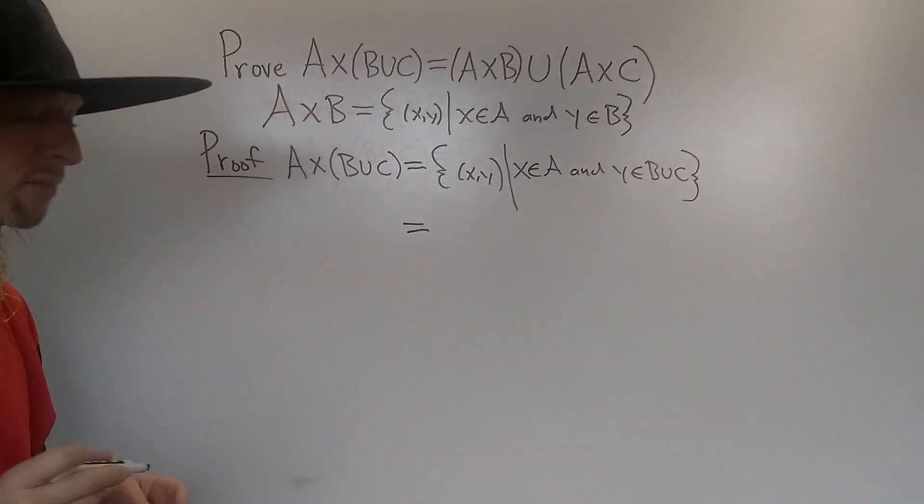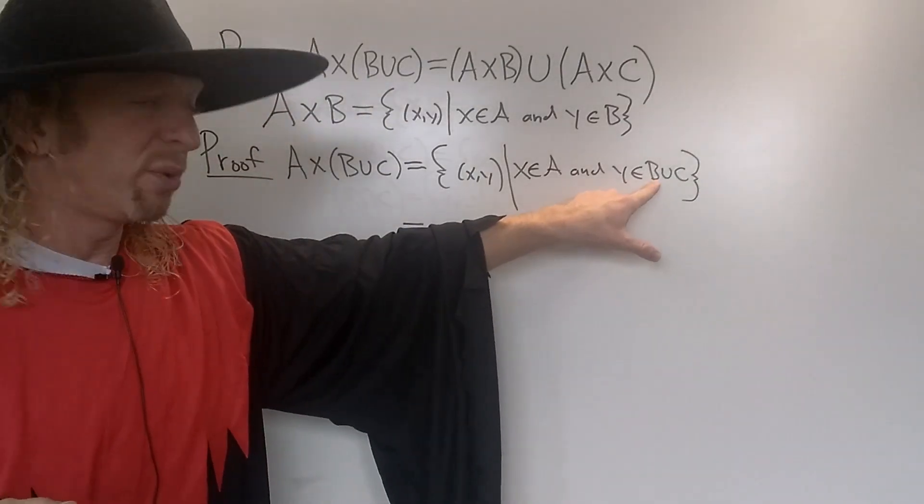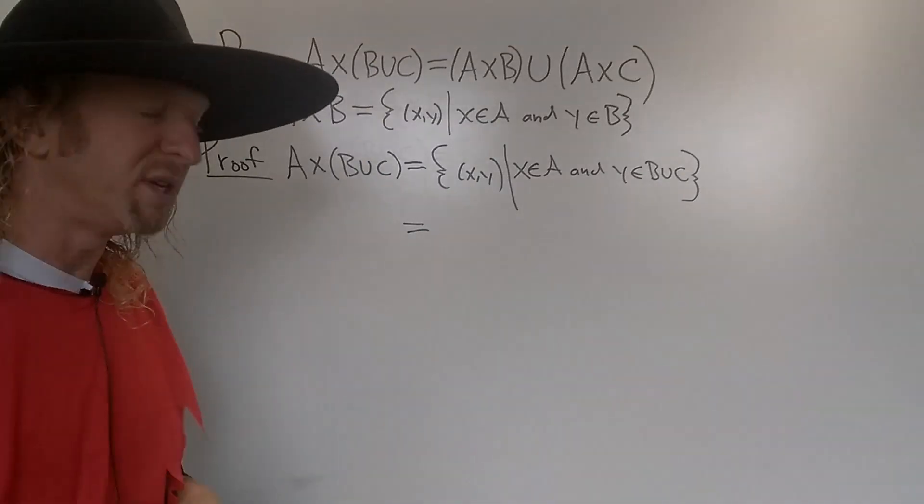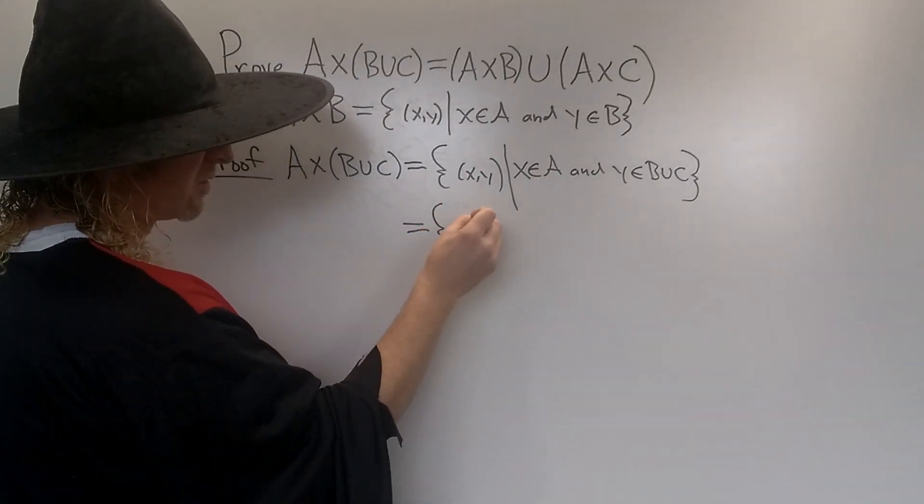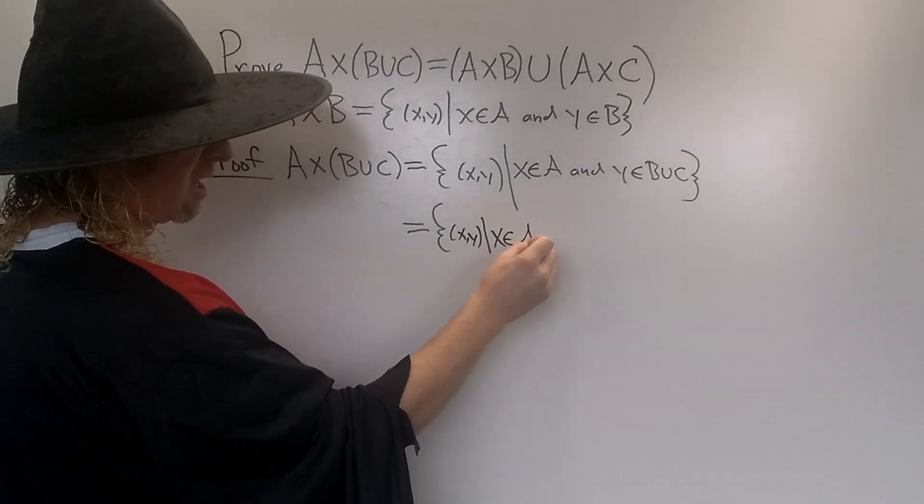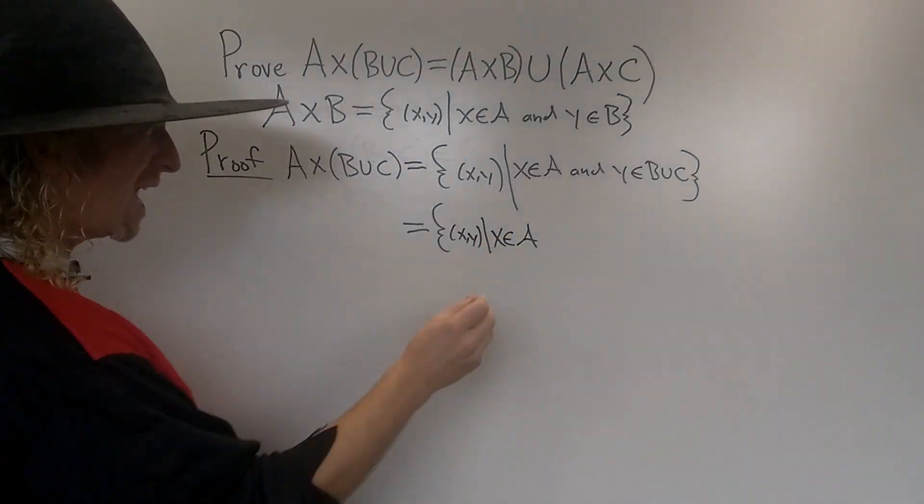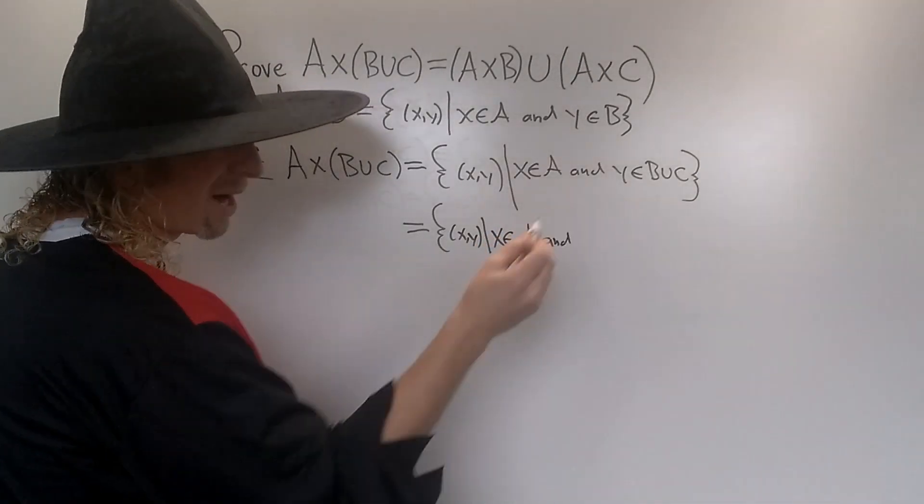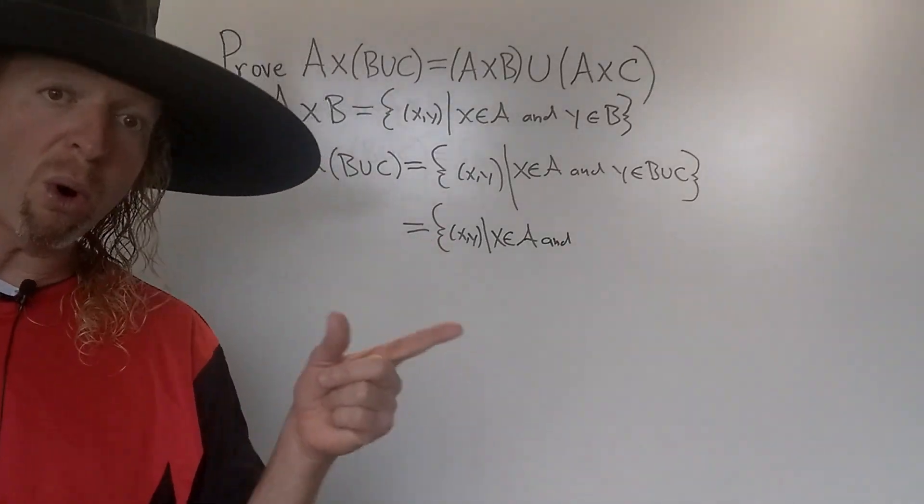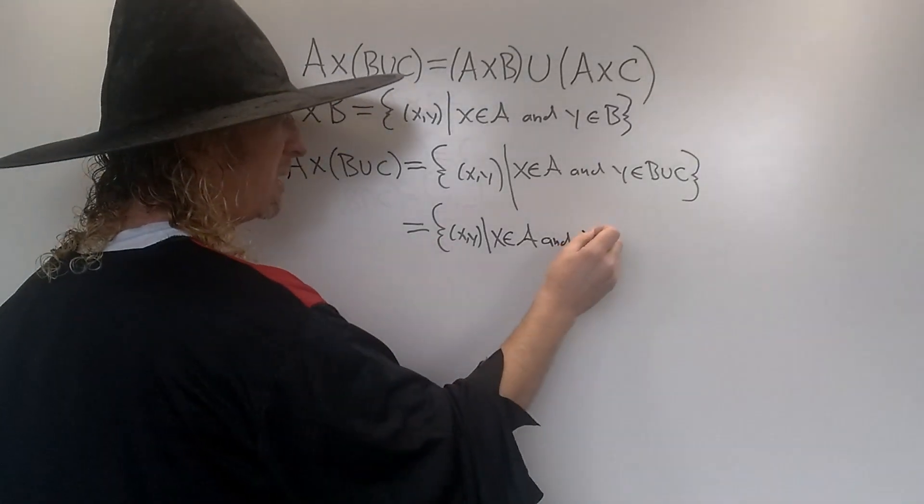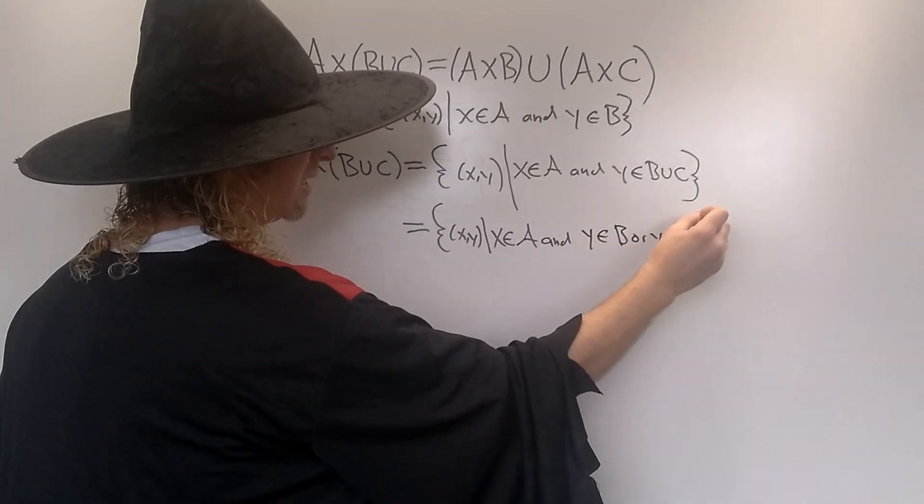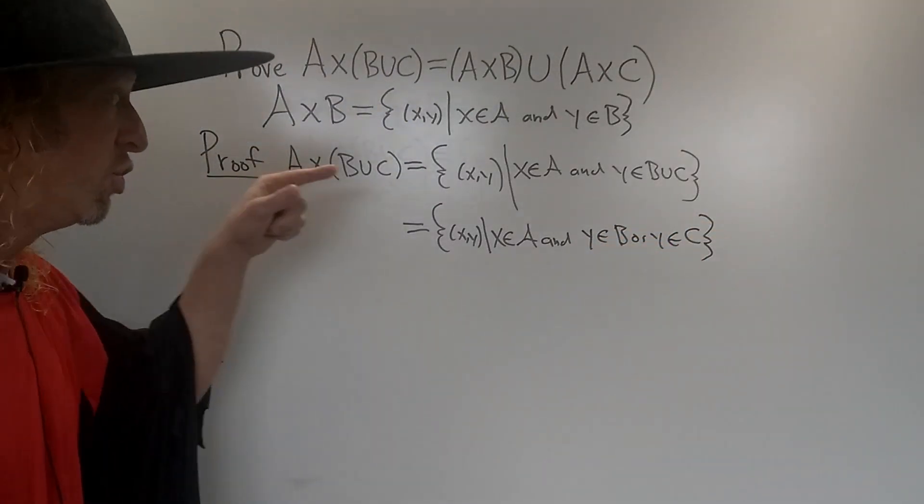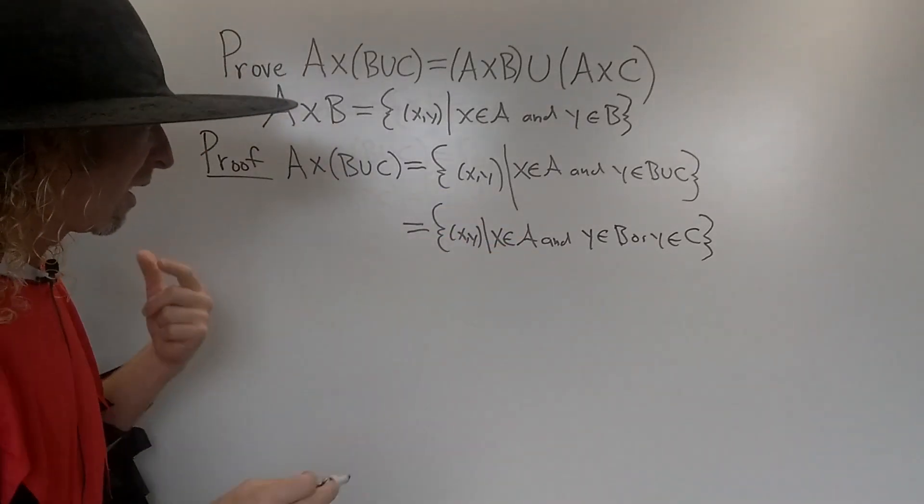This is equal to... So now we can break it up, right? We can write down what it means for y to be in B∪C. So this is the set of all ordered pairs (x,y) such that x∈A, and while y is in the union, it means y∈B or y∈C. So y∈B or y∈C. That's what it means for y to be in the union of these sets, right?